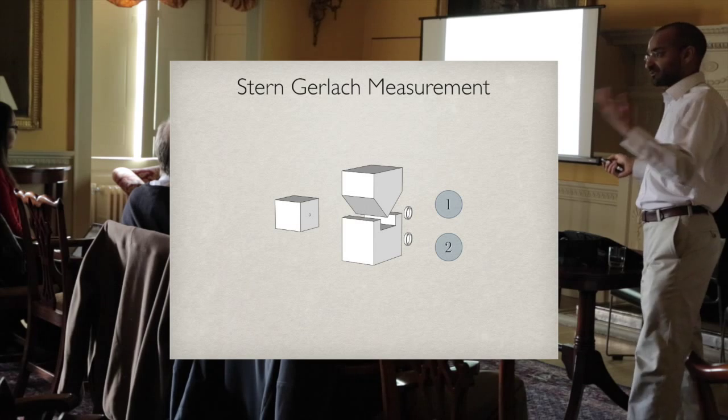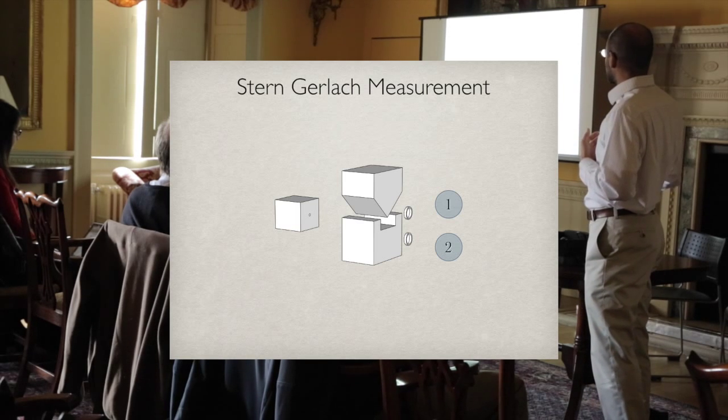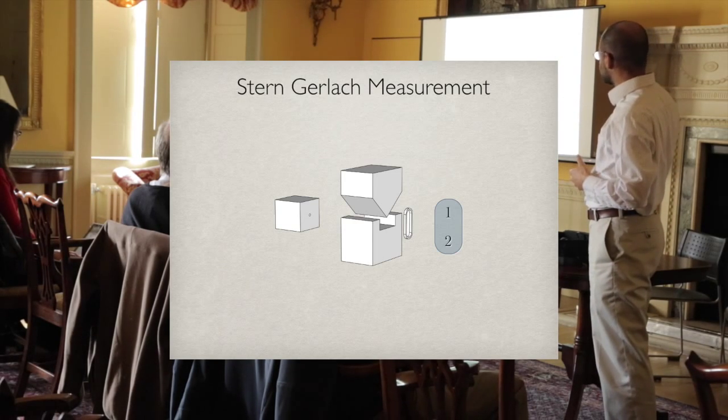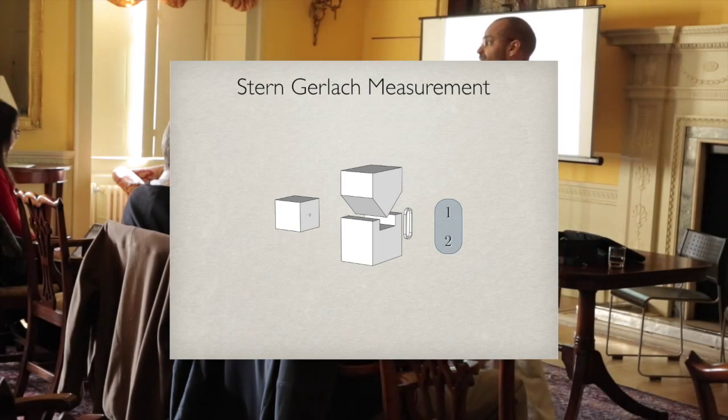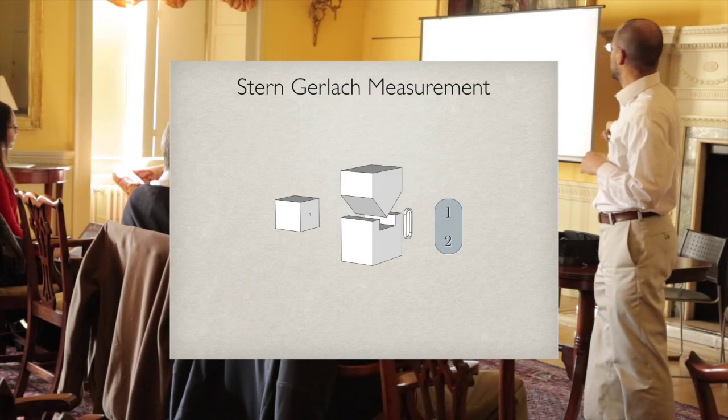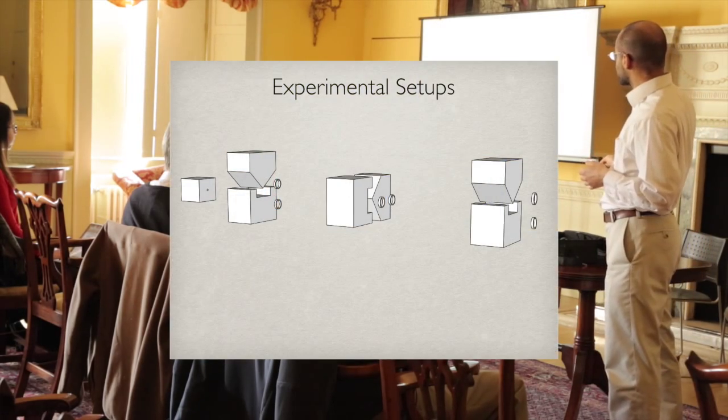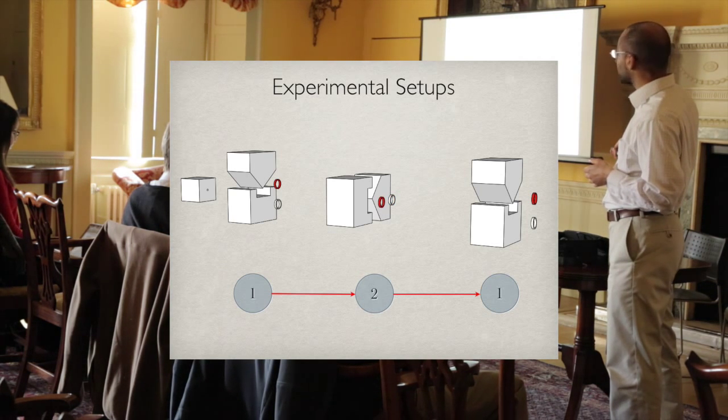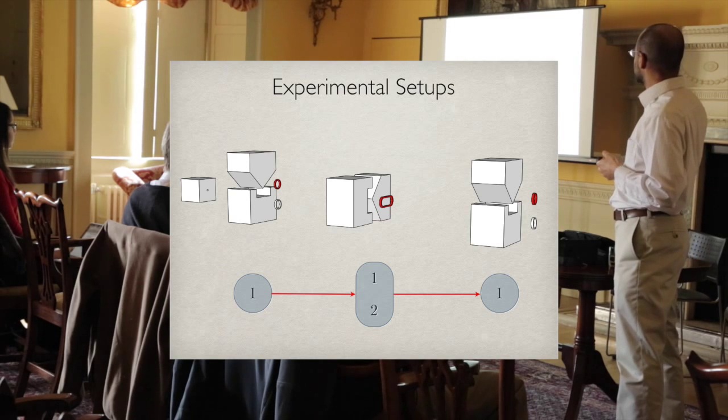I'm going to go back to the Stern-Gerlach experiment because it's much cleaner and the outcomes are discrete. I'm going to allow myself to possibly coarse-grain the two detectors into one big detector. If that fires, I can't say whether the particle went on the upper or lower part. A typical experiment analogous to double-slit would be like this: the system starts in this box, comes out and causes that to fire, then that one, then that one. Or maybe that one fires. Or I have a slightly different experiment where these two detectors are coarse-grained.